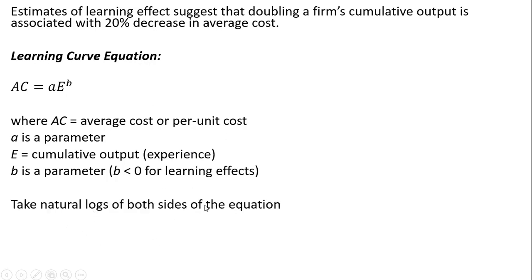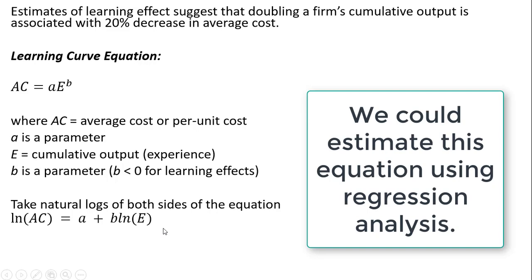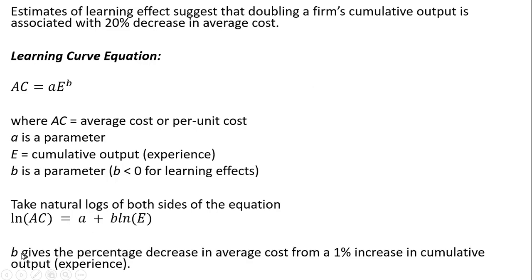It's common to take the natural logs of both sides of this equation. So doing that, we'll get something like this. And B here now gives the percentage decrease in average cost from a 1% increase in cumulative output or experience. So that's like an elasticity measurement.